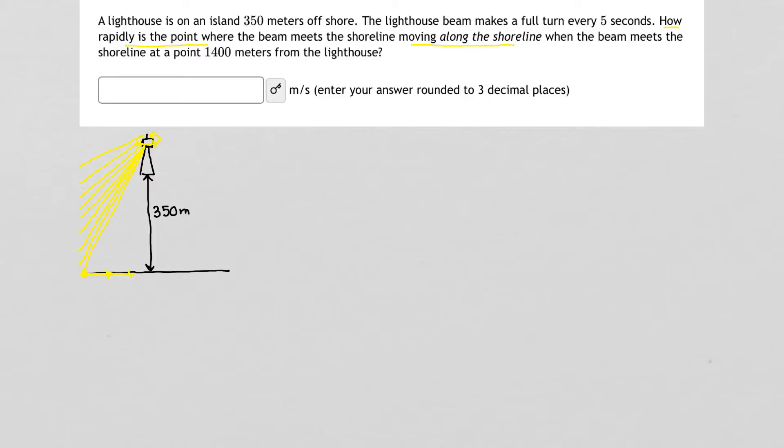There are a couple things that we can notice. The first is there's a right triangle idea going on here. There's a right triangle going on and combined with that right triangle are some things that are changing. Specifically, this distance along the shoreline is changing, and the angle as the light rotates around the lighthouse is also changing. So that sets up a really nice picture for us.